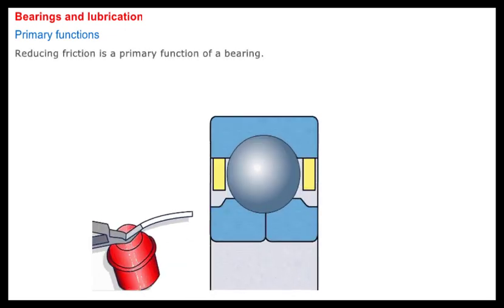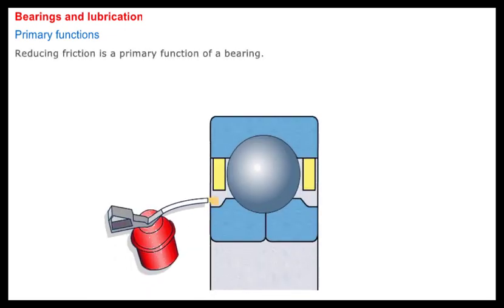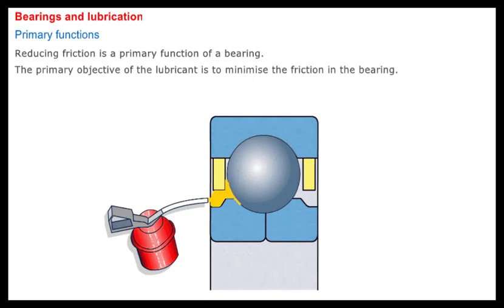Minimizing friction between moving parts is a primary function of a bearing. However, in order to achieve longer life and lower energy consumption, friction within the bearing has to be minimized. This is the main objective of a bearing lubricant, thereby minimizing wear.